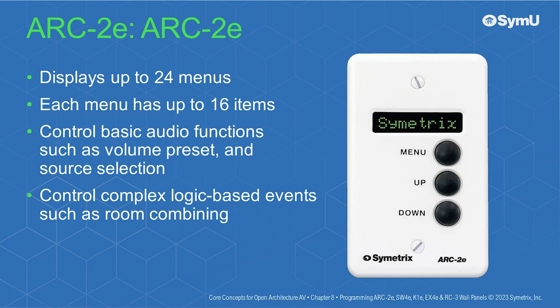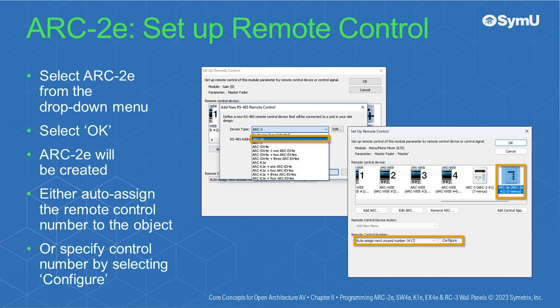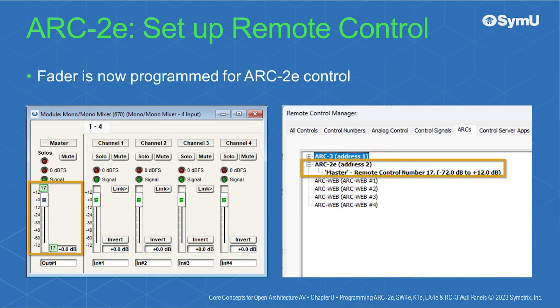The Arc2E displays up to 24 menus, each with up to 16 items. These are used to control basic audio functions such as volume, preset, and source selection, or complex logic-based events such as room combining. To assign a parameter to an Arc2E, right-click on the specific object to be controlled, like a fader handle, then select Setup to Remote Control. From the Setup Remote Control window, choose Add New Arc, select Arc2E from the drop-down menu, then select OK. The Arc2E will be created; then either auto-assign the remote control number or specify a control number by selecting Configure.